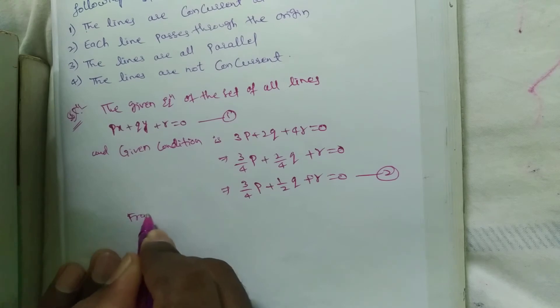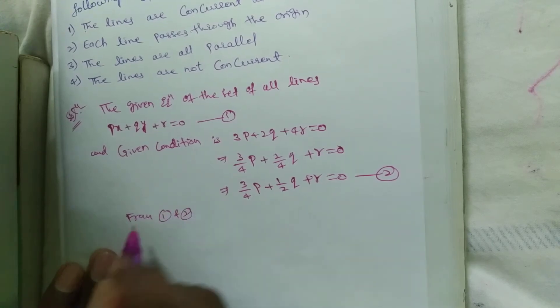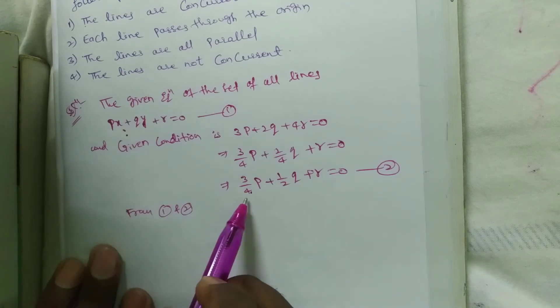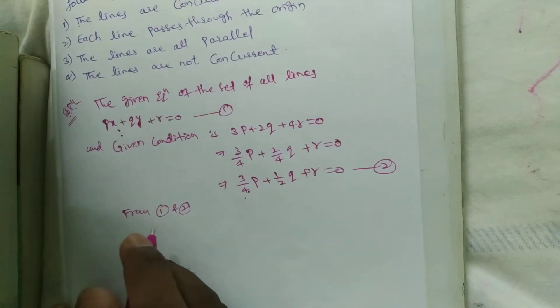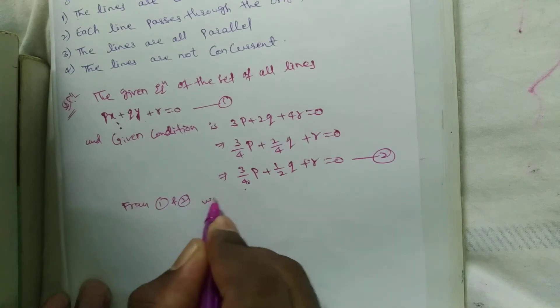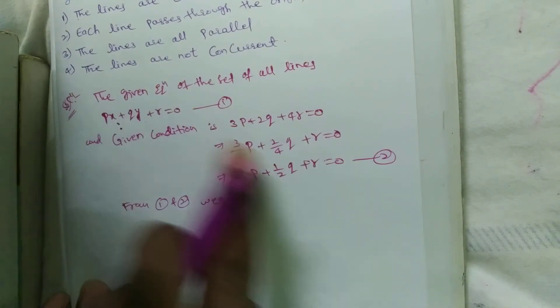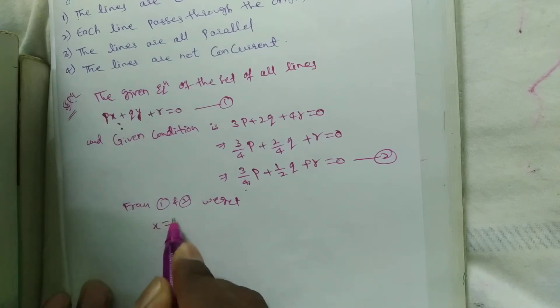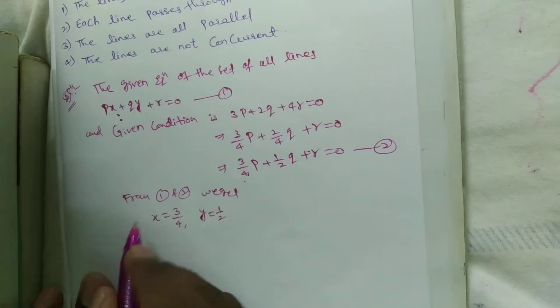From equation 1 and 2, see here, x equal to 3 by 4, y equal to 1 by 2. We get, comparing these two equations here, x equal to 3 by 4, y equal to 1 by 2.